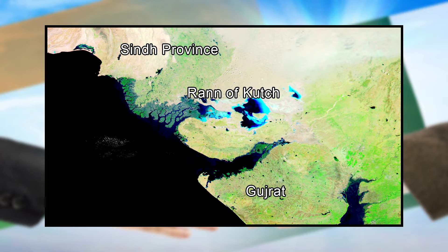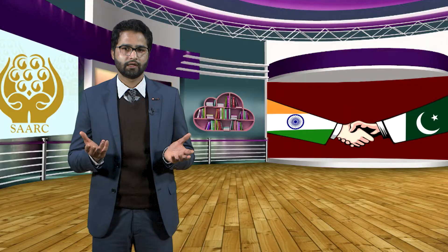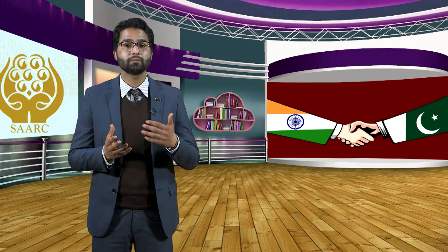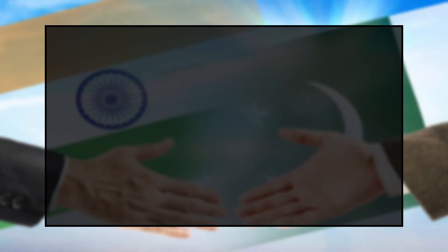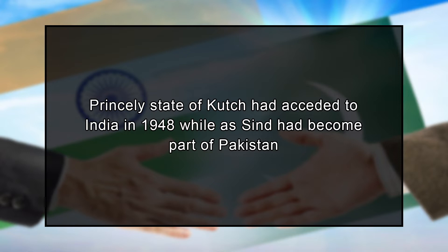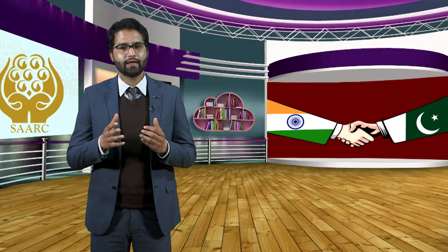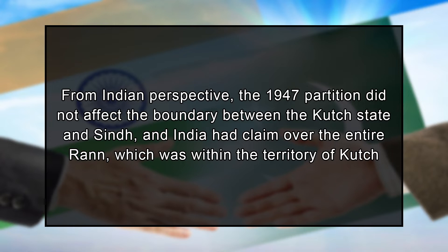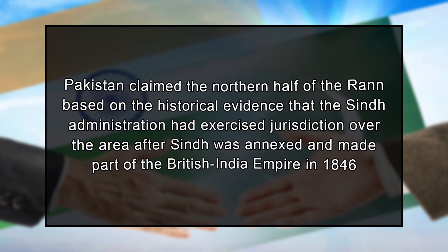The two countries also managed to reach a negotiated agreement over the Rann of Kutch, a marshy, uninhabitable area situated between the Gujarat state of India and the Sindh province of Pakistan. The issue had given rise to serious military skirmishes in the spring of 1965. British Prime Minister Harold Wilson's intervention helped calm tensions and both sides agreed to refer the dispute to an international tribunal. From the Indian perspective, the 1947 partition did not affect the boundary between the Kutch state and Sindh, and India claimed the entire Rann within Kutch's territory.